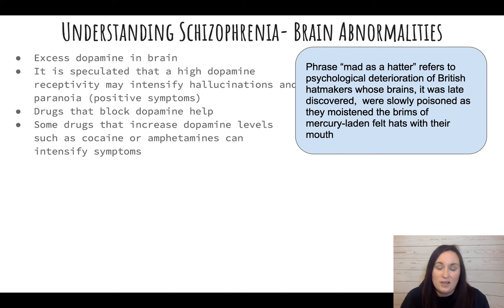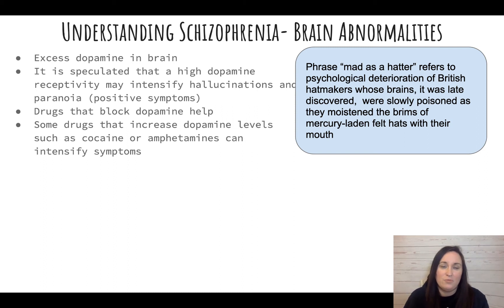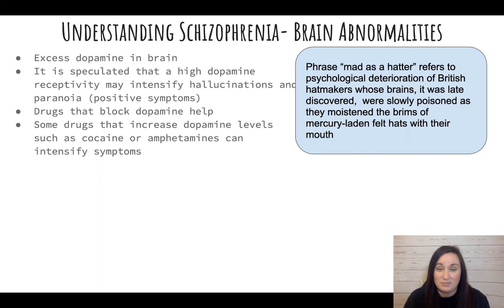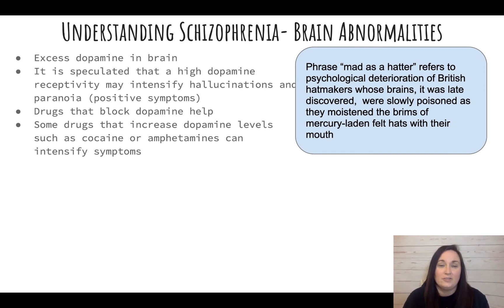There are many brain abnormalities in people who have schizophrenia. One is an excess of dopamine receptivity — meaning more receptors for dopamine — and that excess dopamine is linked to symptoms of schizophrenia, intensifying hallucinations and paranoia. This adds to the positive symptoms. Drugs that help schizophrenia work by blocking dopamine to lower and balance it out.